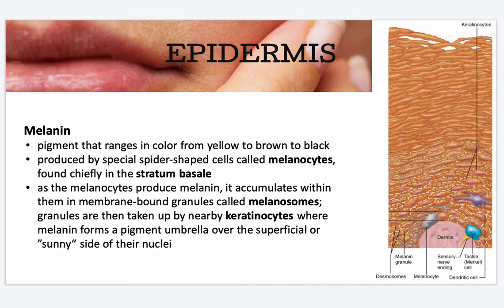Melanin is a pigment that ranges in color from yellow to brown to black and is produced by special spider-shaped cells called melanocytes, found chiefly in the stratum basale. When the skin is exposed to sunlight, melanocytes are stimulated to produce more melanin pigment — that's why the skin becomes a shade darker. As the melanocytes produce melanin, it accumulates within them in membrane-bound granules called melanosomes. These granules then move to the ends of the melanocyte's spidery arms, where they are taken up by nearby keratinocytes.